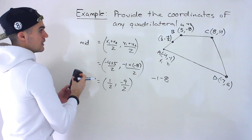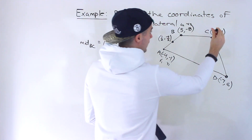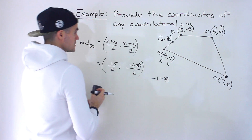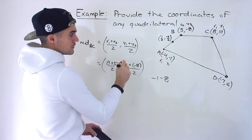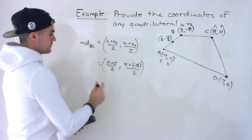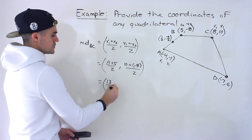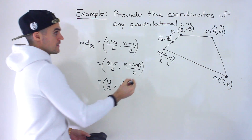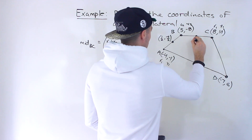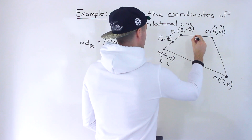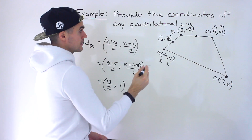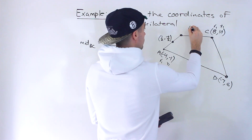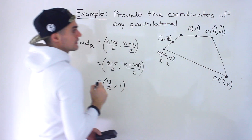Now what's the midpoint of BC? We already have B as X2, Y2, so let's label C as X1, Y1 — that's eight and ten. So we get: eight plus five over two, which is thirteen over two; and ten plus negative eight, which is ten minus eight, which is two over two, giving us one. So the midpoint of BC is (13/2, 1).